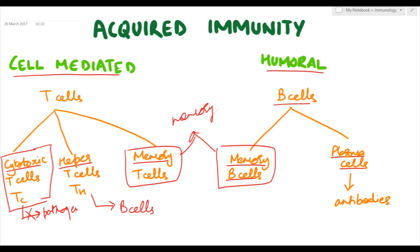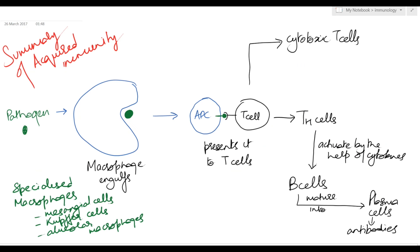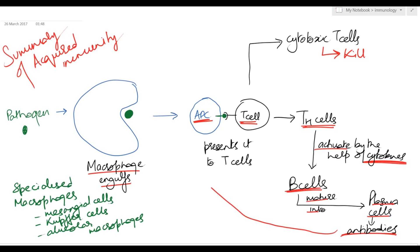Memory cells allow a strong secondary response when exposed to the pathogen a second time. When B cells mature into plasma cells, they produce antibodies. To summarize acquired immunity: when a pathogen enters the body, it is engulfed by the macrophage acting as an antigen-presenting cell, which presents the antigen to T cells. T cells can mature into cytotoxic T cells — which directly kill the pathogen — or T helper cells, which activate B cells via cytokines. B cells then mature into plasma cells to produce antibodies that attack the pathogen.